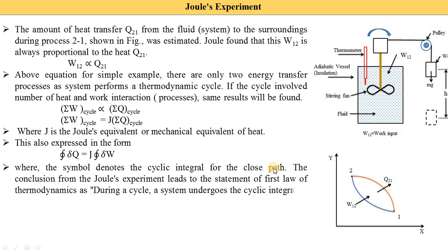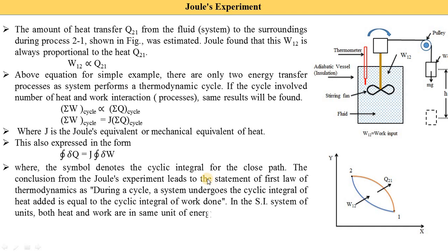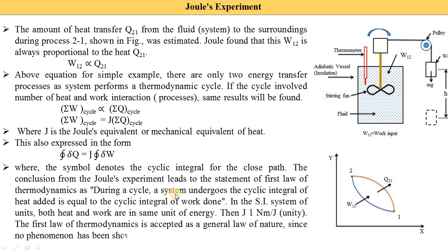The conclusion from the Joule experiment leads to the statement of the first law of thermodynamics: during a cycle, the cyclic integral of heat added is equal to the cyclic integral of work done. In the SI system of units, both heat and work are in the same unit of energy. The Joule unit is one Newton-meter per Joule. The first law of thermodynamics is accepted as a general law of nature, since no phenomenon has been shown to contradict it.